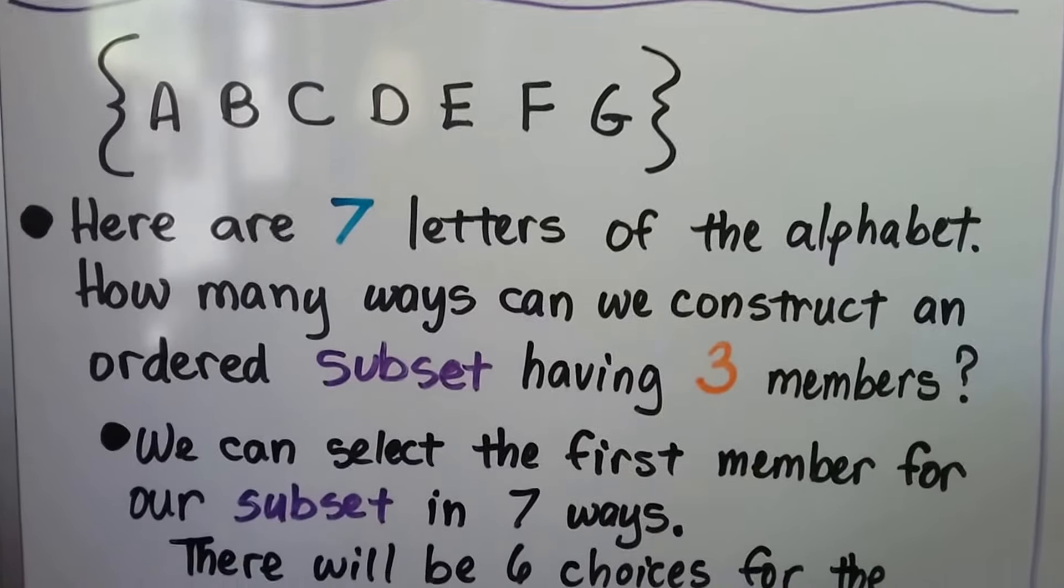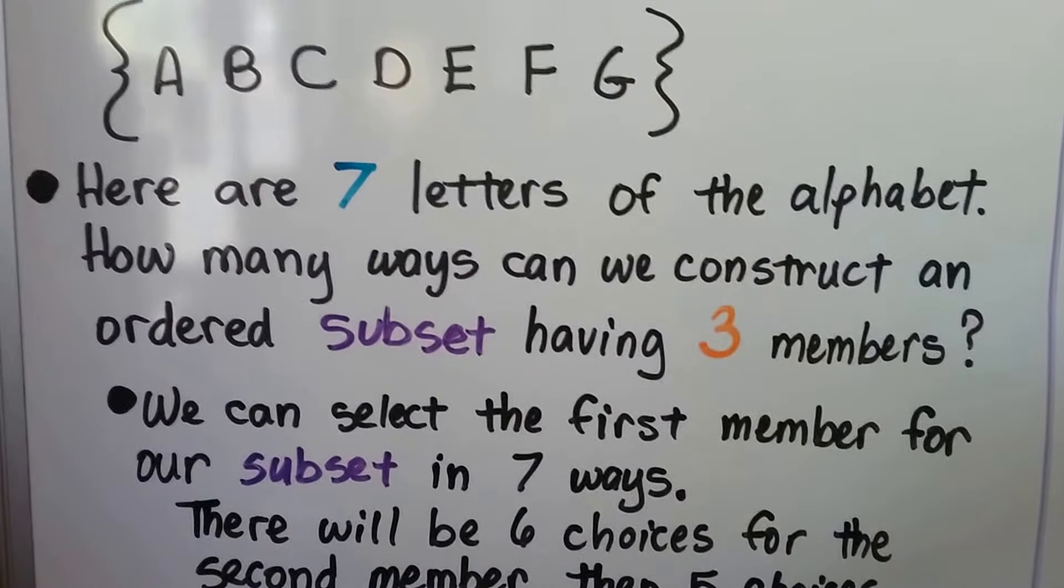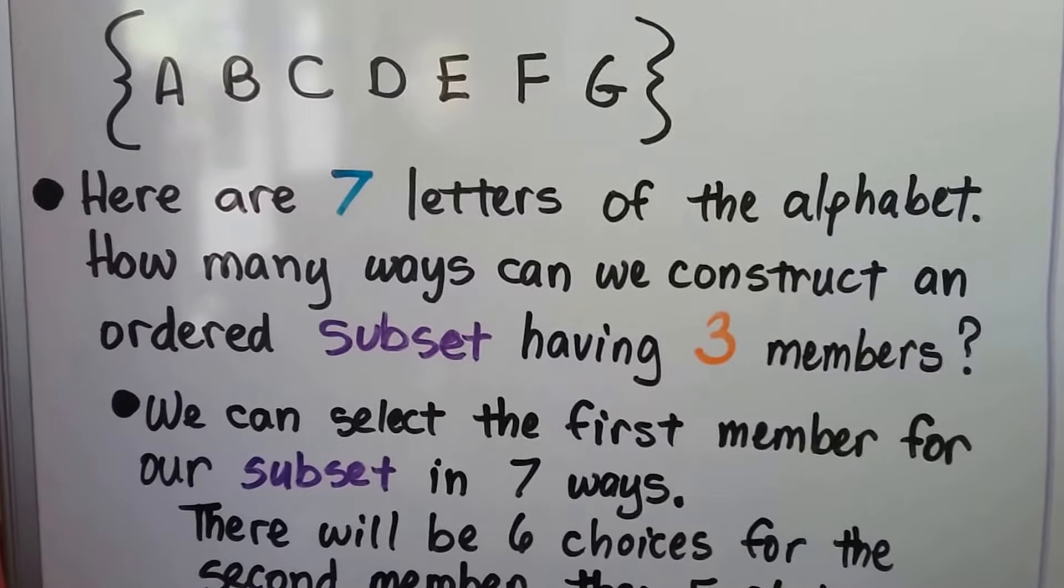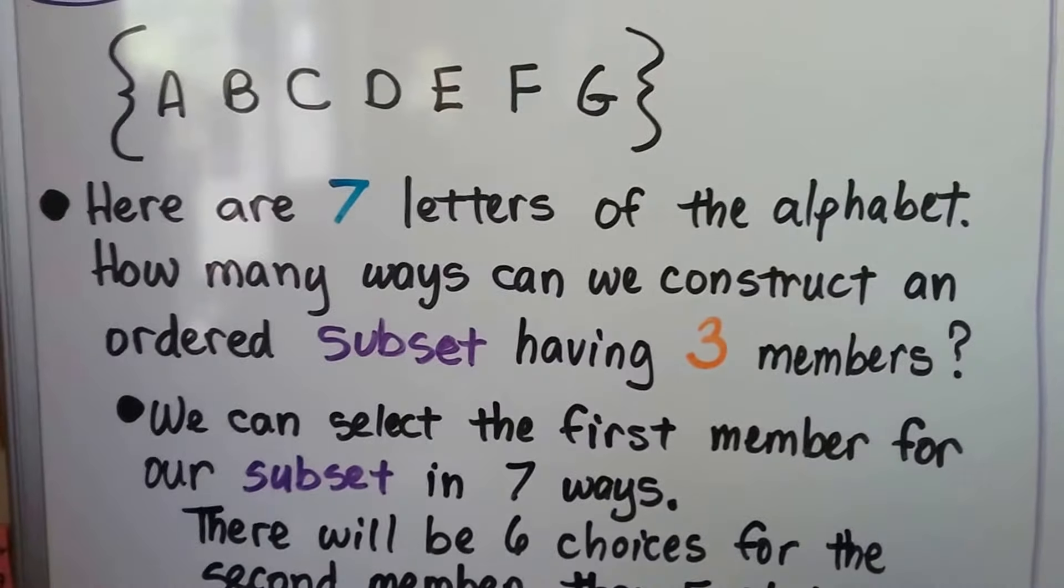Here are seven letters of the alphabet. How many ways can we construct an ordered subset having three members? So we only need three members.